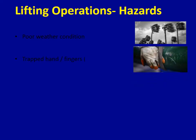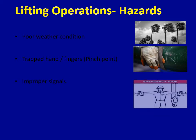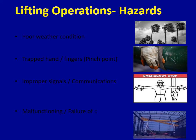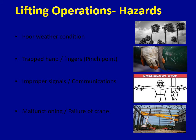Trapped hands and fingers between the load can cause fractures. Improper signals and communication can cause unintentional crane movements. Malfunctioning or poorly maintained cranes can cause hydraulic leaks and allow the crane boom to come down unintentionally.